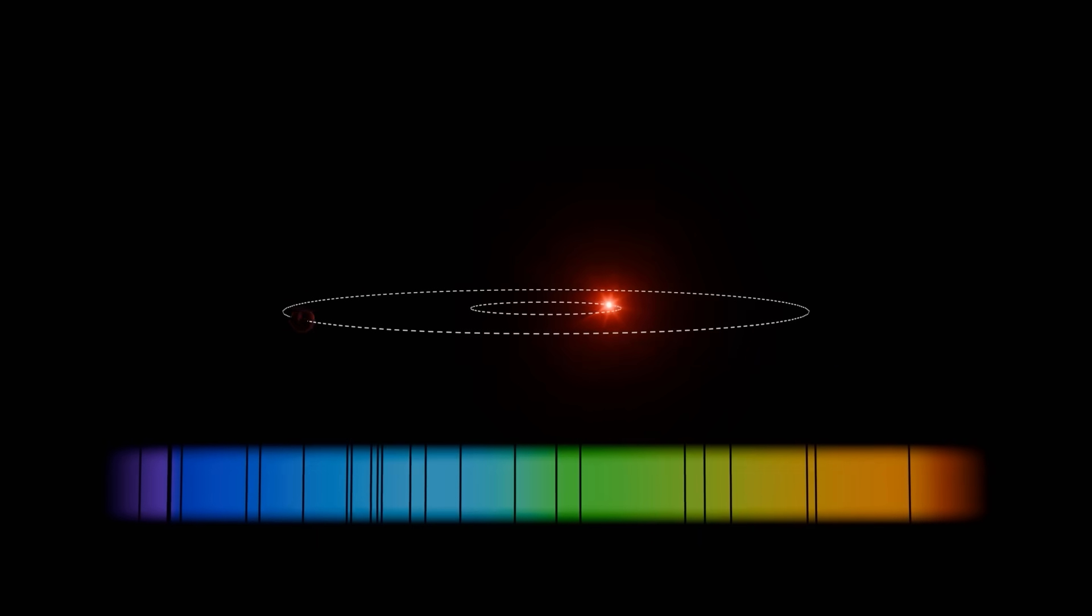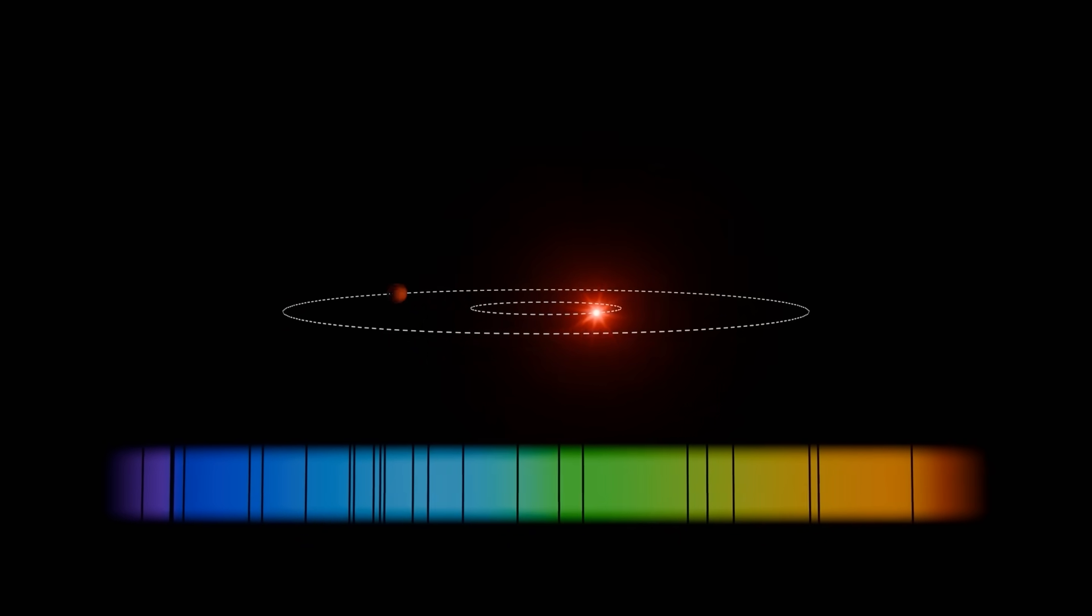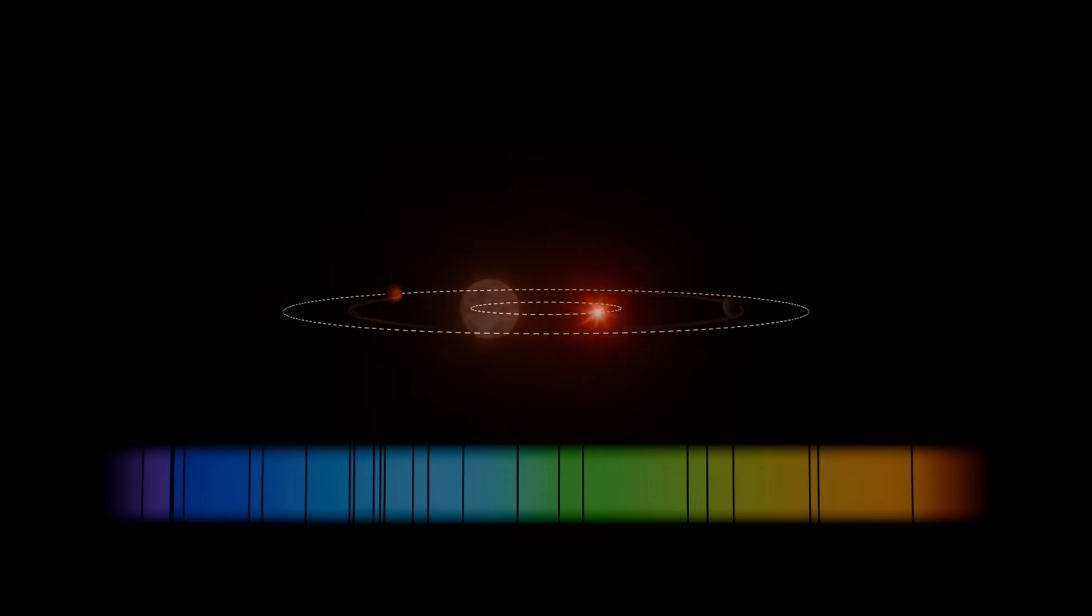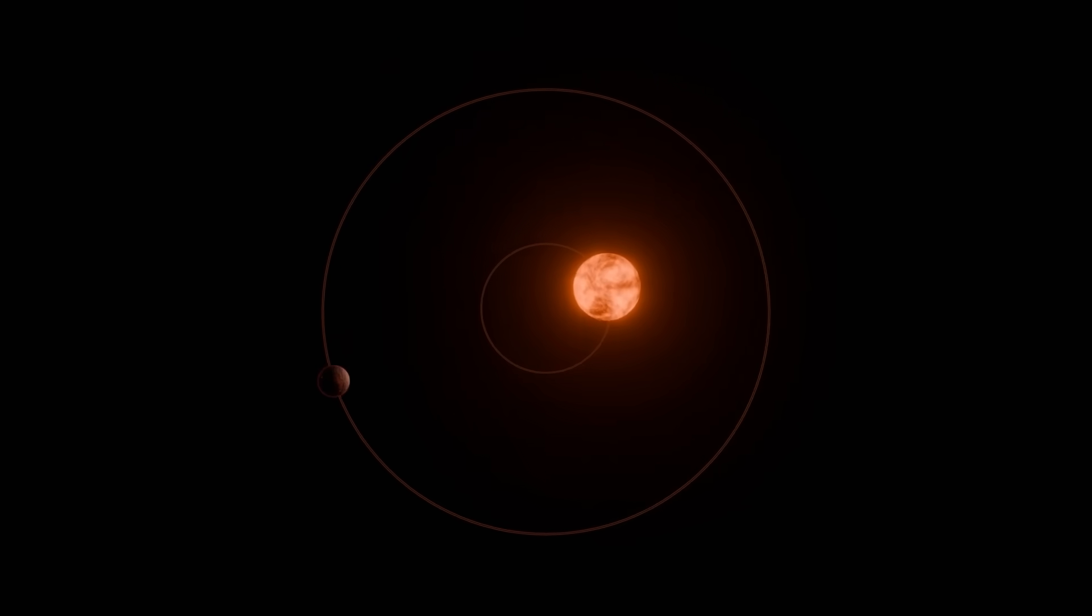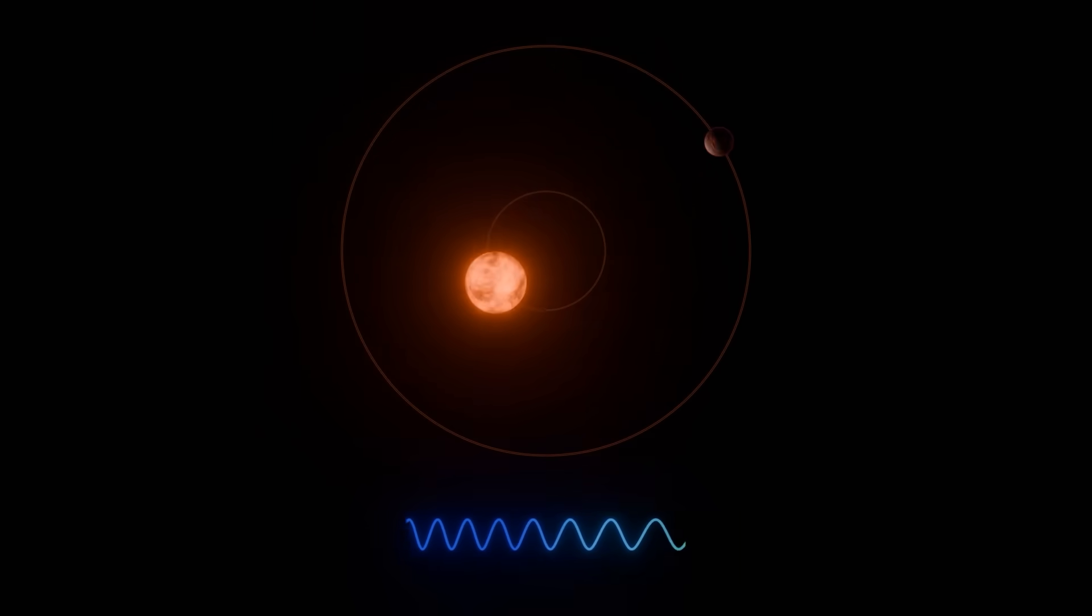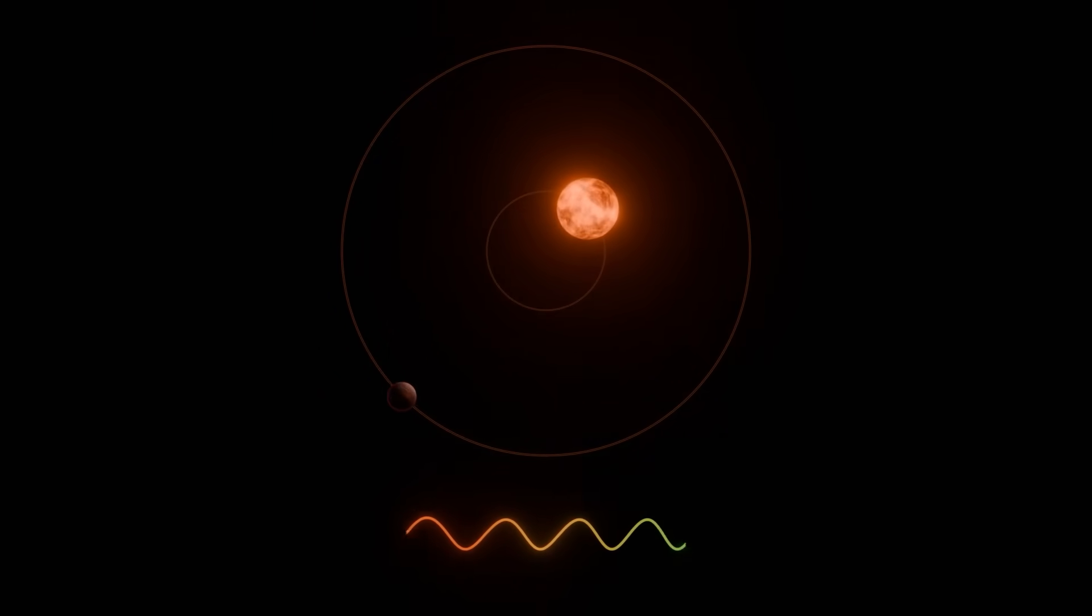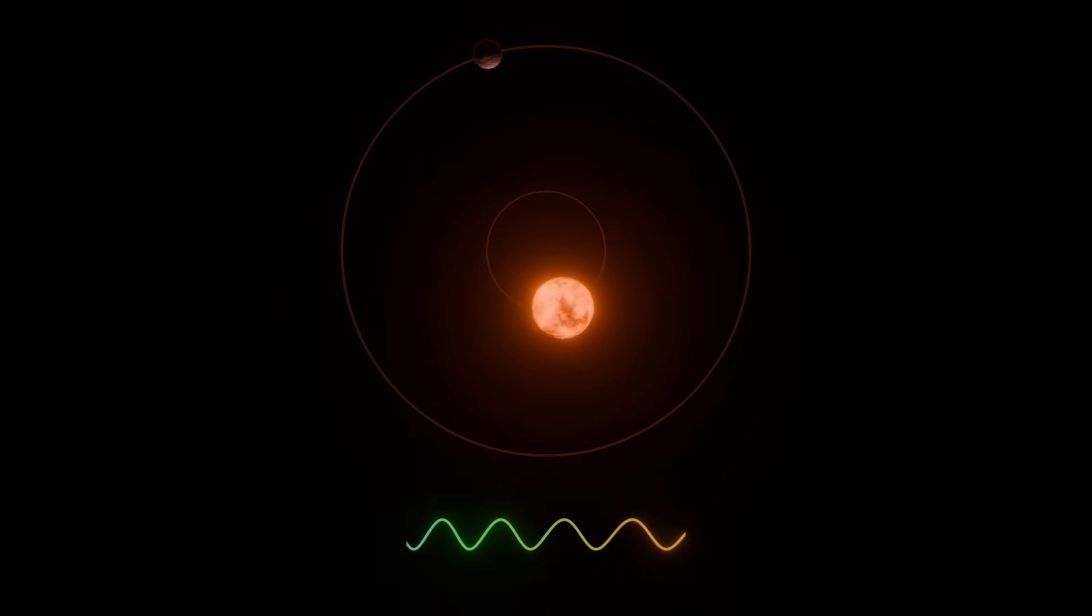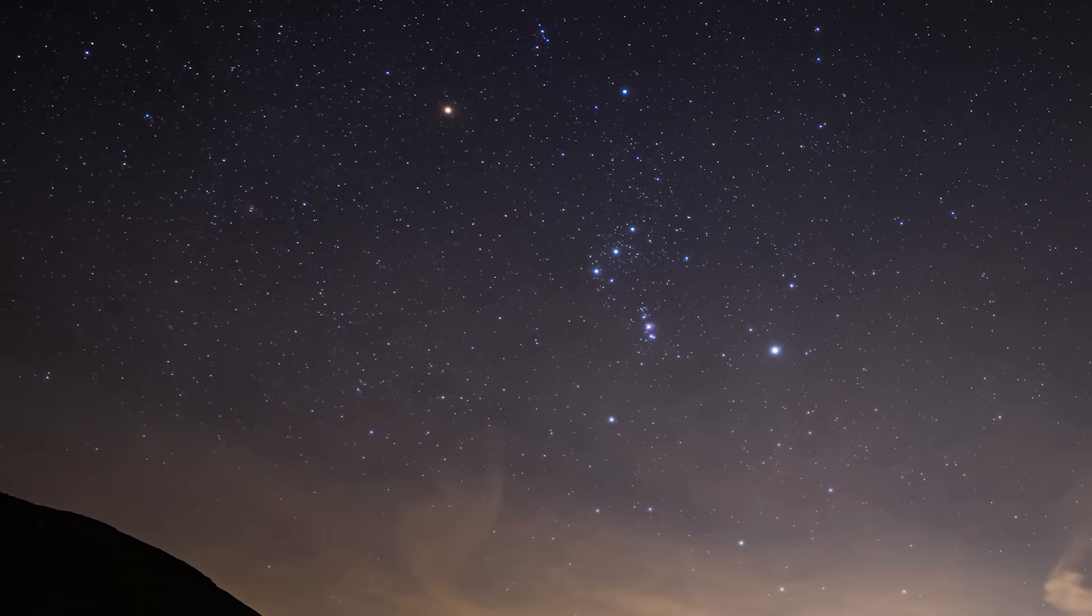But here's where it gets interesting. If a star's radial velocity changes in a smooth, repeating pattern, it's usually a sign that something is orbiting it, like a planet or another star. That's because of gravity. When a star has a companion, the two don't just orbit separately. They both revolve around a shared center of mass. As the star gently gets pulled toward and then away from us in its orbital dance, its light rhythmically shifts between blue and red. In Betelgeuse's case, this exact pattern appeared.